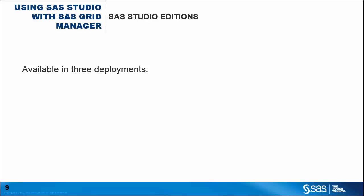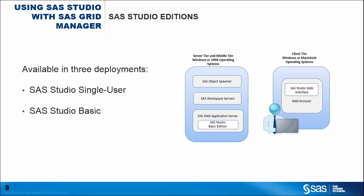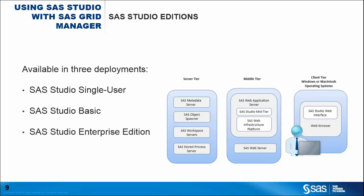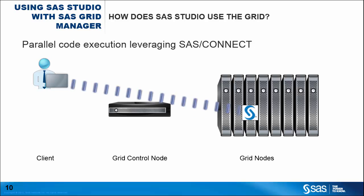SAS Studio comes in different editions: SAS Studio Single User, SAS Studio Basic, and SAS Studio Enterprise. In order to run code from any edition of SAS Studio on the grid, you must have SAS Grid Manager licensed on the same machine as the SAS Studio Workspace server. With all editions of SAS Studio, you can use in your code any of the functions included with SAS Grid Manager license to send the code to the grid.